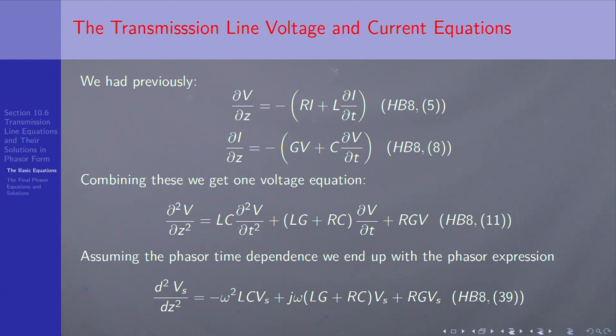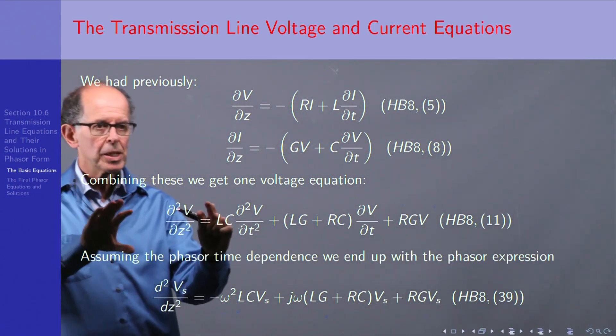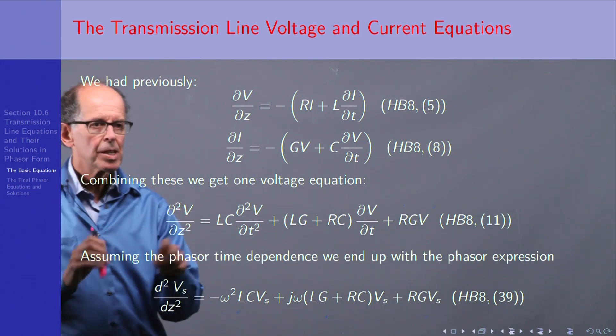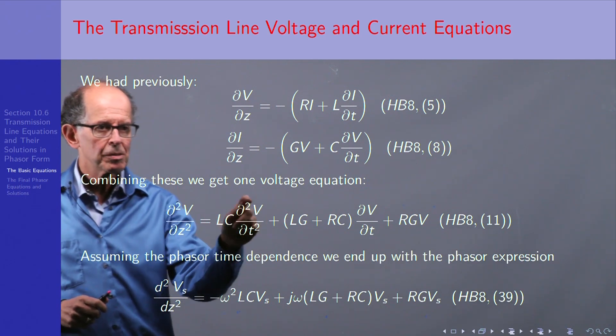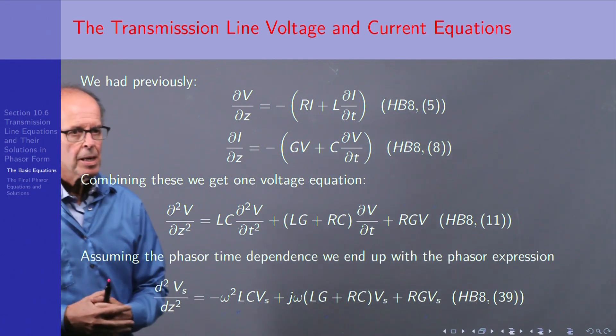And you can see it has three terms: LC times second derivative plus something times first derivative plus something with no derivatives. If there was no damping resistance or conductance in the system, then the last two terms in 11 would disappear, and we would have our classical wave equation that we saw earlier, second derivative in z proportional to second derivative in t, with LC being one over the velocity squared.